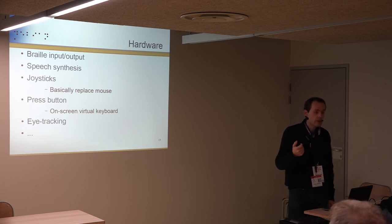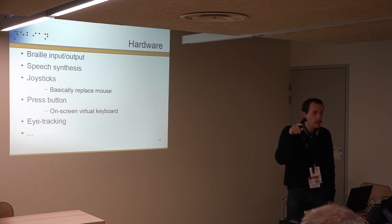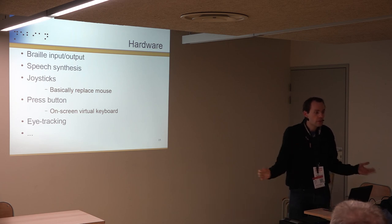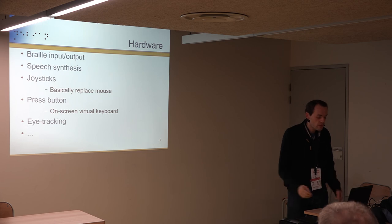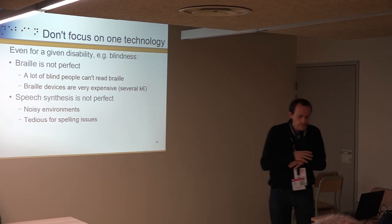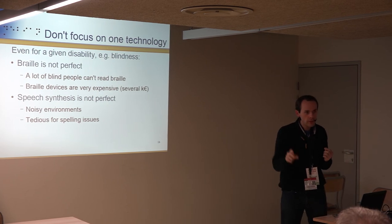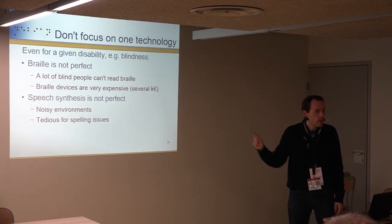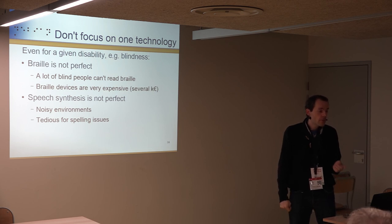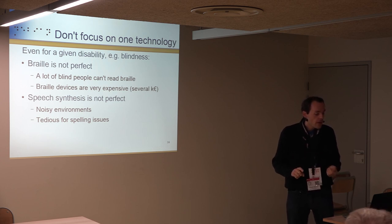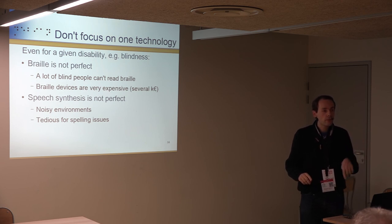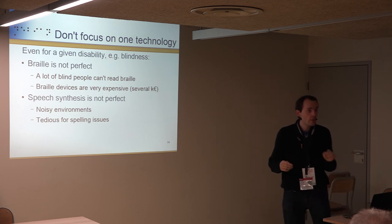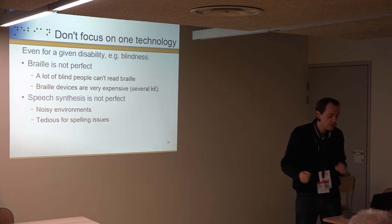Conversely, for input, users who can't type on a keyboard or use a mouse can use a joystick, a button they press, or even eye-tracking — blinking to click — because they cannot move anything at all. You should never focus on just one technology: a lot of people cannot read Braille, so you can't say something is accessible just because it supports Braille. Also, Braille devices are extremely expensive, and speech synthesis is not perfect either — in a noisy room, or for programming where you need spelling, speech synthesis is really not convenient.